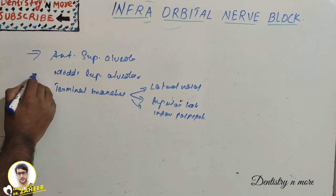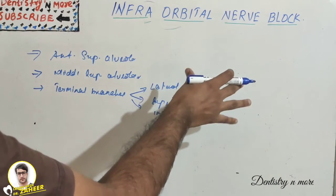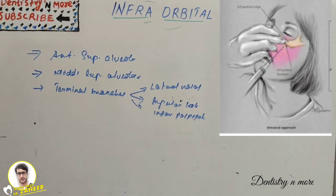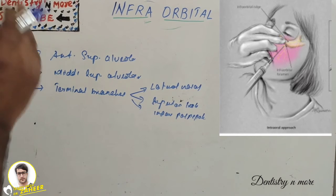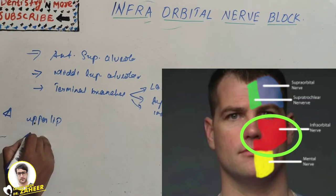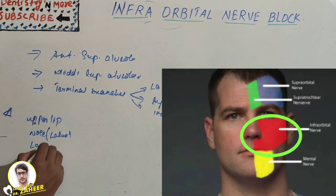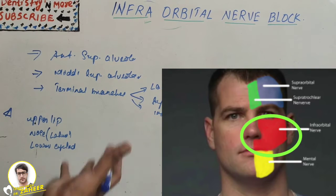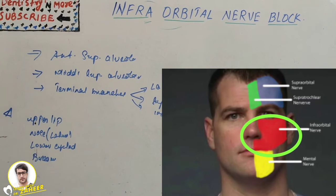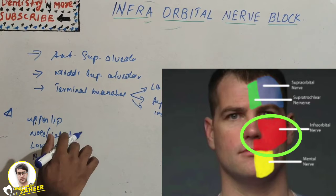These are the nerves anesthetized when we apply the infraorbital nerve block. The areas to be anesthetized — since the injection is deposited just to the side of the nose below the eye — include the upper lip (unilaterally, on the injection side only), the lateral aspect of the nose, the lower eyelid, the buccal mucosa of the upper anterior teeth and premolars, the pulp and investing structures of those teeth, and mostly the mesiobuccal root of the first molar.